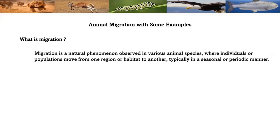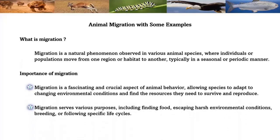Animal migration — what is migration? Migration is a natural phenomenon observed in various animal species where individuals or populations move from one region or habitat to another, typically in a seasonal or periodic manner. Migration is a fascinating and crucial aspect of animal behavior, allowing species to adapt to changing environmental conditions and find the resources they need to survive and reproduce. Migration serves various purposes including finding food, escaping harsh environmental conditions, breeding, or following specific life cycles.